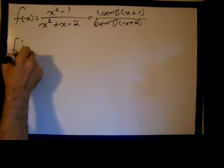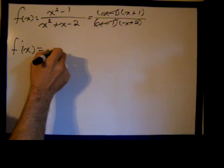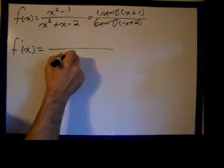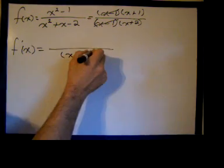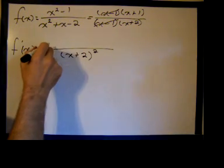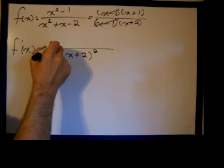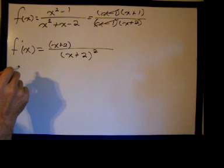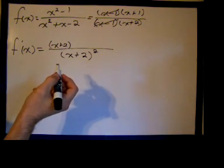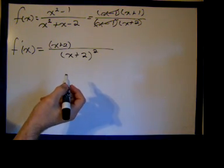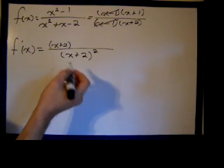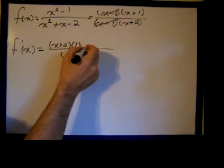So f prime equals, with x plus 2 quantity squared in the denominator: the denominator x plus 2 times the derivative of the numerator. The derivative of x is just 1, the derivative of 1 is 0, so it's just times 1,